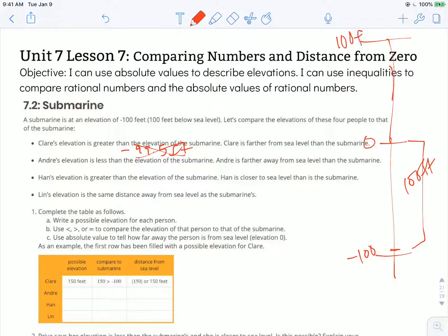in the positive direction so that she can be above the submarine and greater distance from sea level than the submarine. So we could do something like 101 feet or even 100.01 feet if we wanted to get really obnoxious. But anything that's greater than 100 feet above sea level would be where Claire could be located.